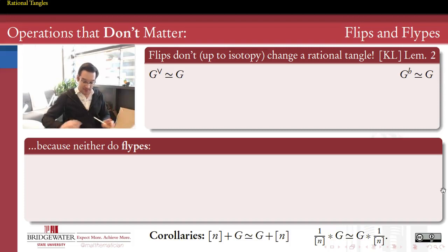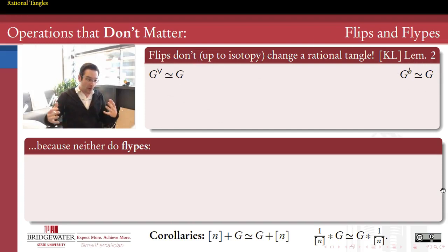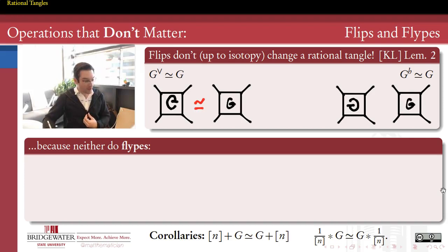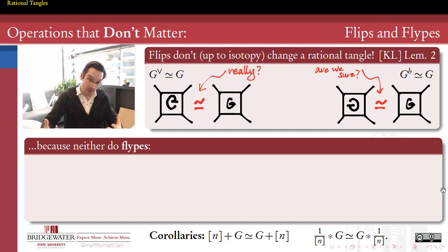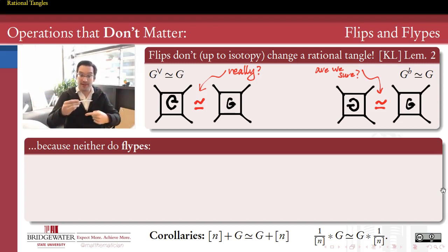And here's the big surprise. In our last video, we saw the definition of the vertical flip and the horizontal flip of a tangle, and we were speculating what these flips actually do to the type of a tangle. The promise I made back then is that they don't actually matter — that the vertical flip and the horizontal flip of a tangle are each the same up to isotopy as the original rational tangle. That seems completely counterintuitive because aren't we reversing all the crossings and reversing where the people holding the ropes are standing? Yes, but because of the new paradigm, we're going to be able to prove that up to isotopy, flipping does not matter to the type of a tangle.